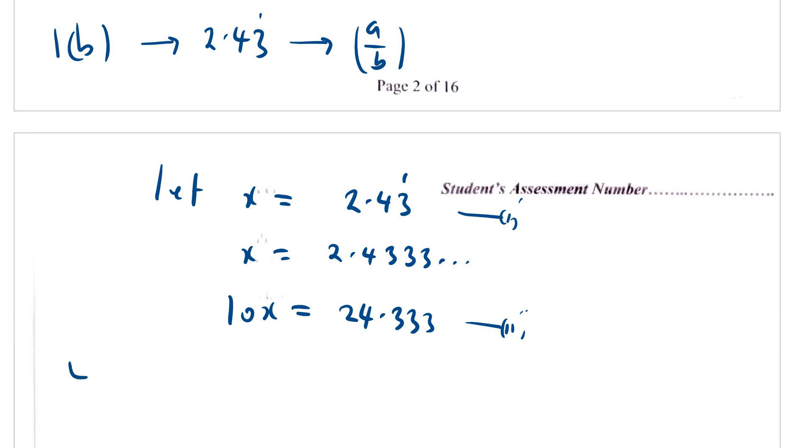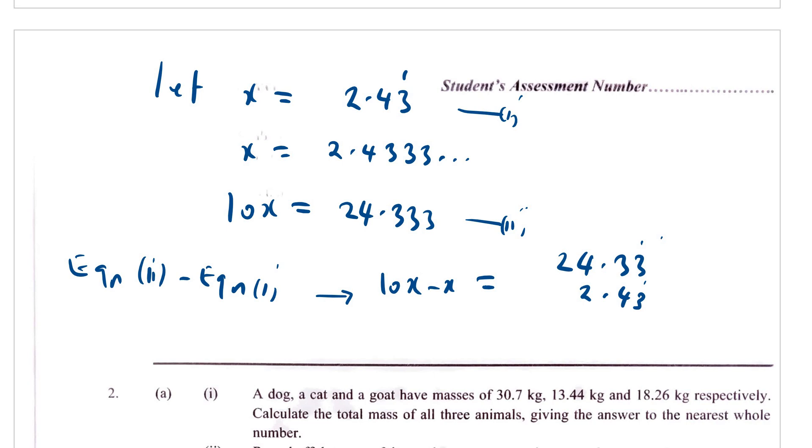Now having these two equations here, I am going to take equation 2 minus equation 1, and from there you get 10x minus x equals 24.3333 minus 2.4333. So 3 here is repeating again, it is not necessary to use all these. You can just say 3 here repeating. So eventually you have 9x equals 21.9.